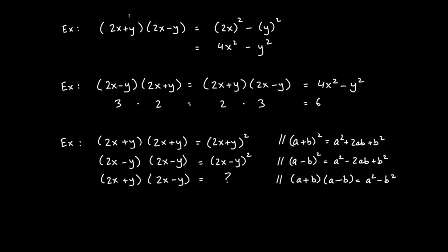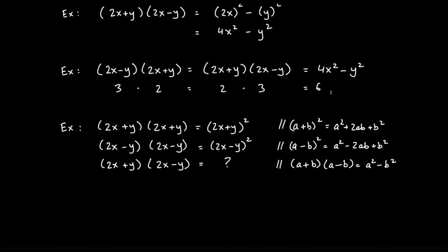What if the order is swapped — (2x − y)(2x + y)? It makes no difference. Just like 3 times 2 equals 2 times 3, the order of multiplication doesn't matter. The answer is still 4x² − y².